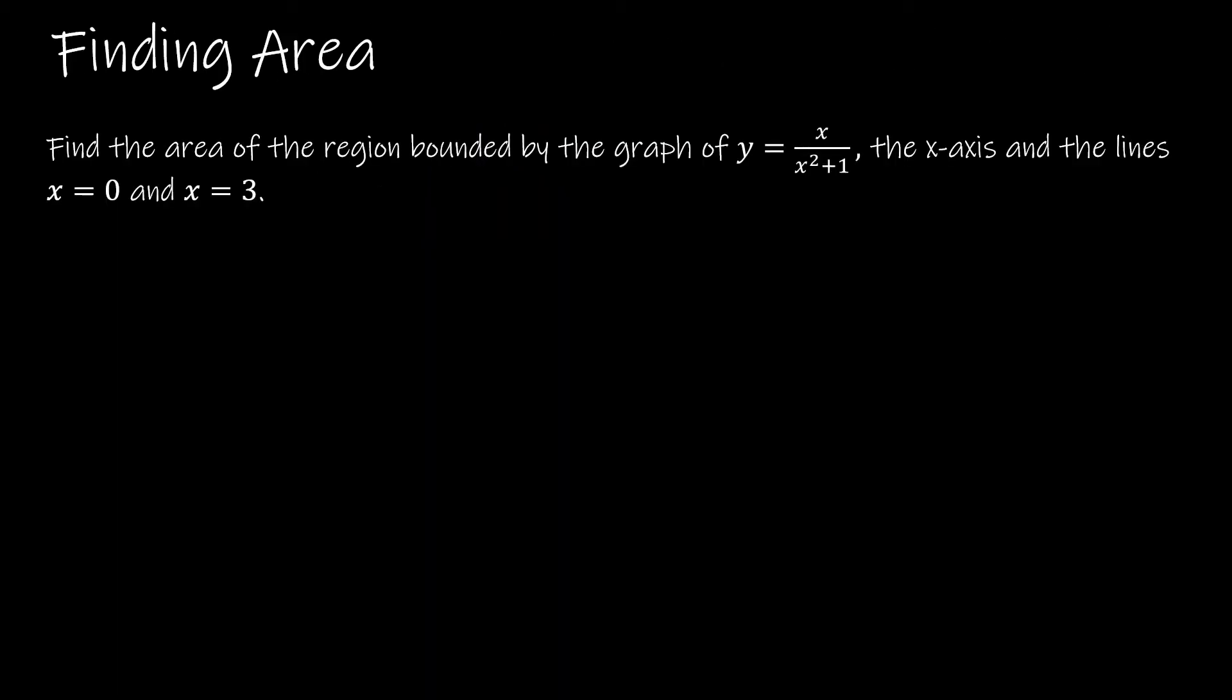Take a look at one more example. This is a finding area example, just to make sure that everyone's clear that when we integrate, it's the same as finding the area under a curve of a function. Here's our function, and the function is bound by the x-axis and the lines 0 and 3. So that means I'm integrating from 0 to 3 of my function, x over x squared plus 1 dx.